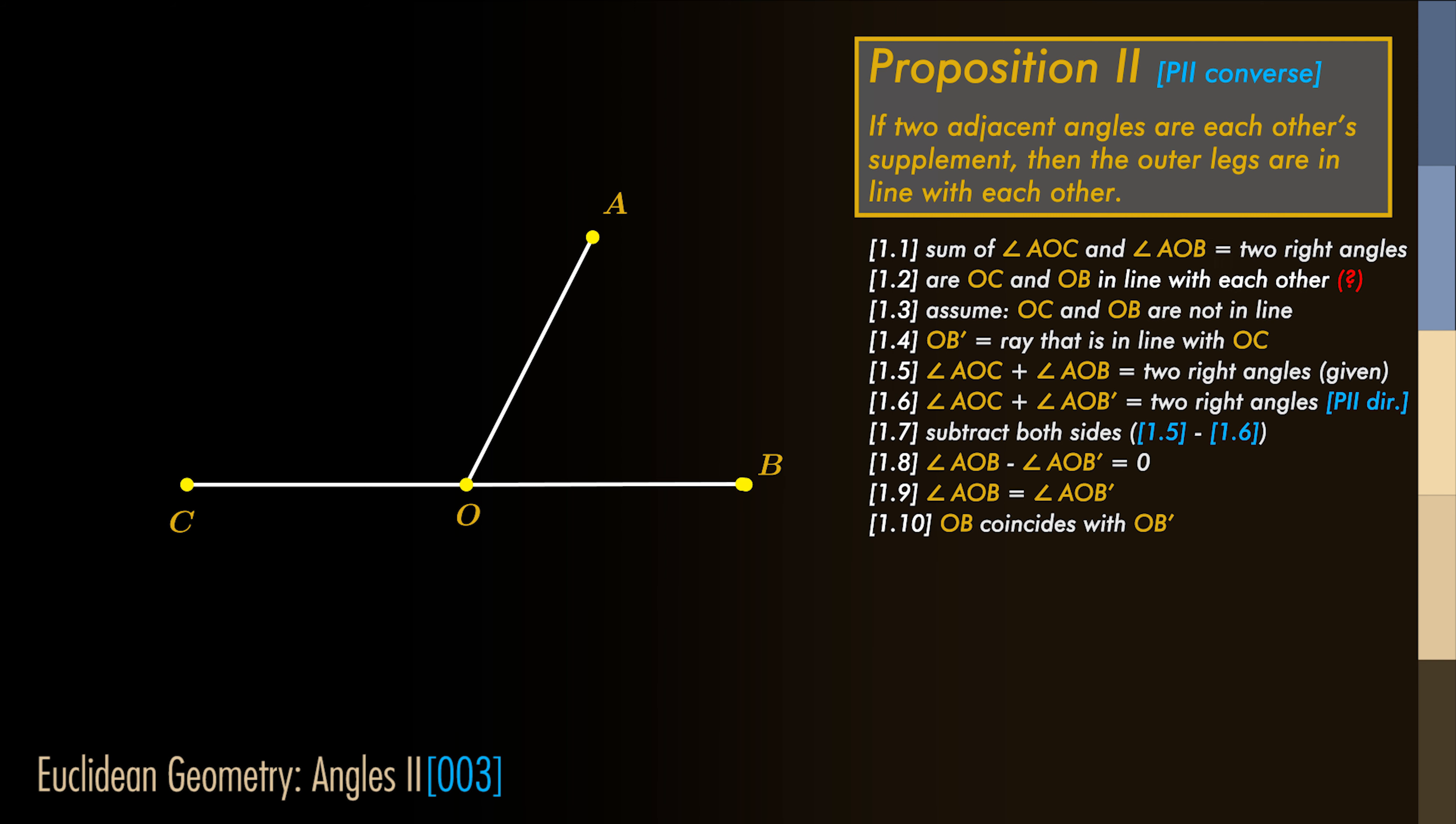Let's prove this. So we know that the sum of the angle AOC and the angle AOB is equal to two right angles. We need now to prove that OB and OC are in line with each other.